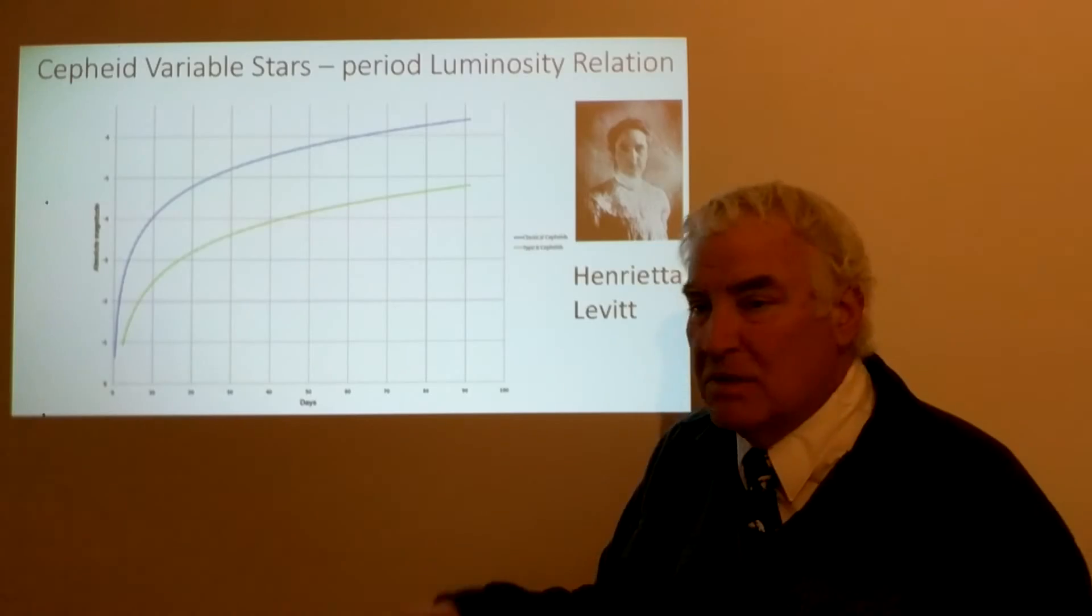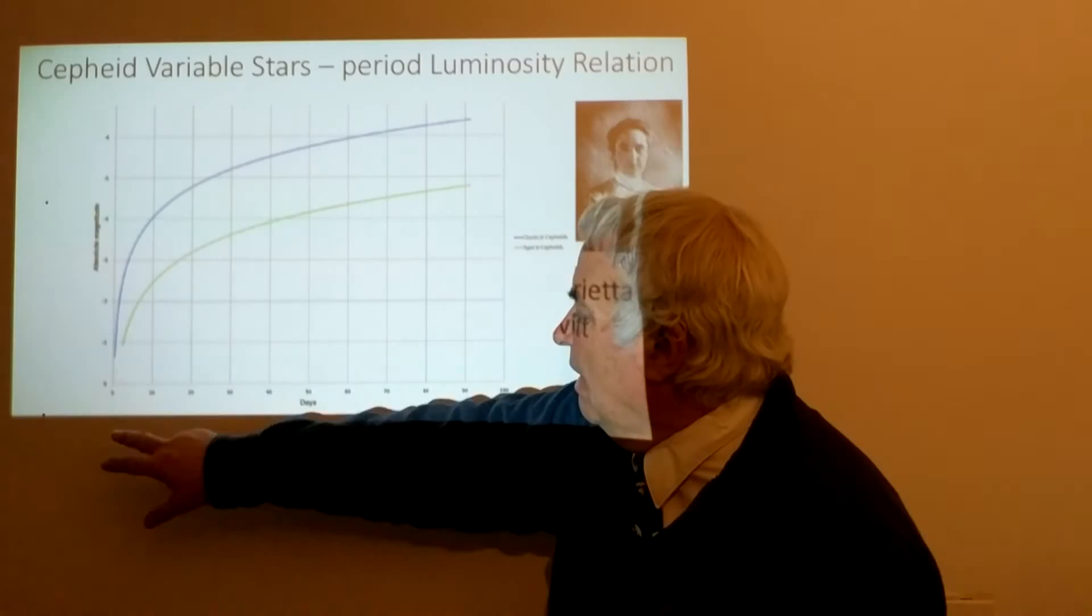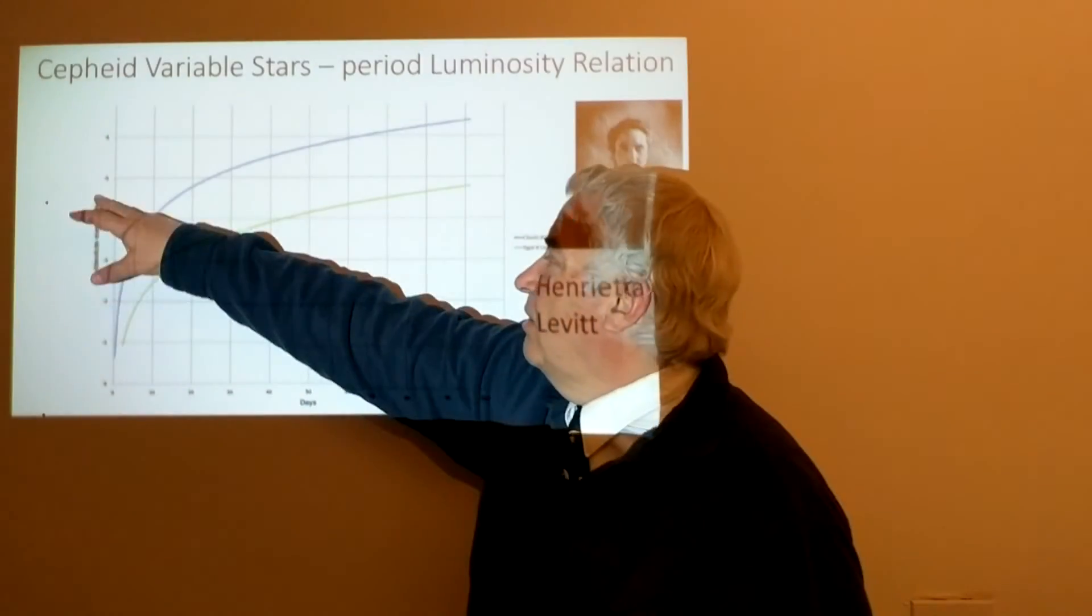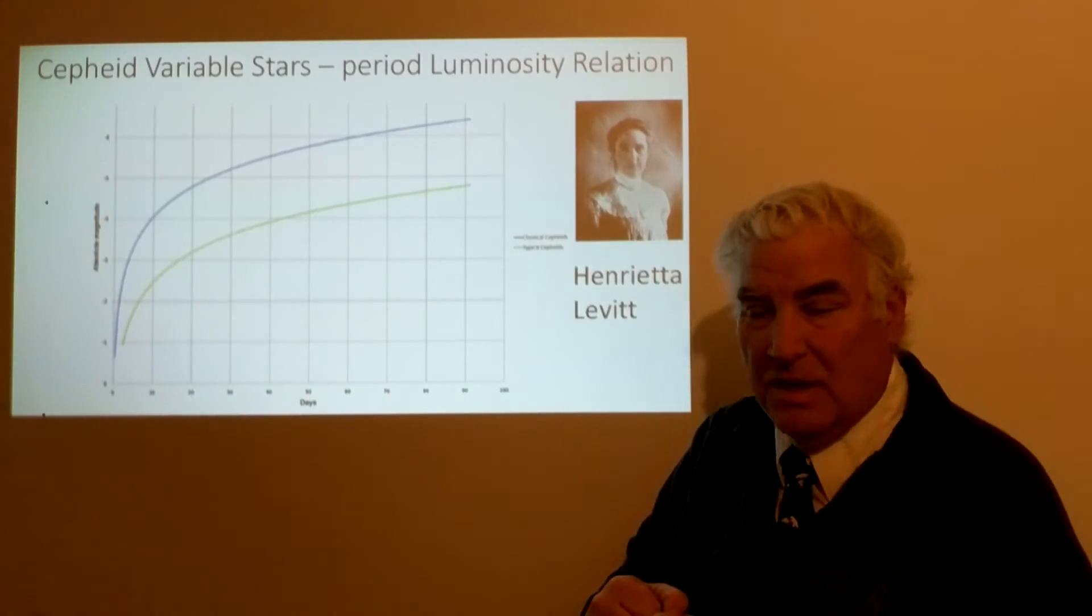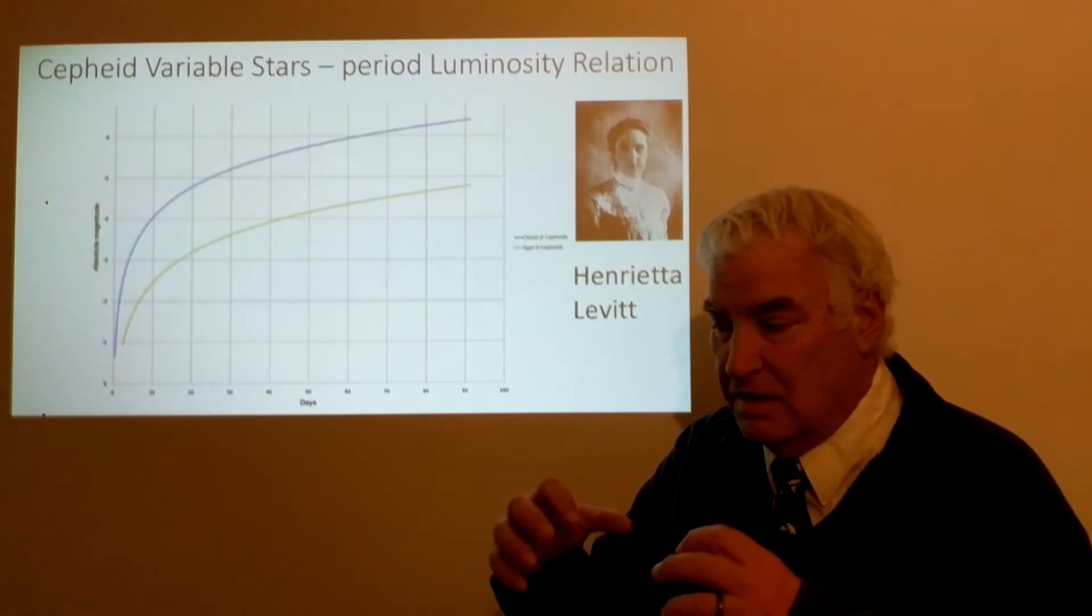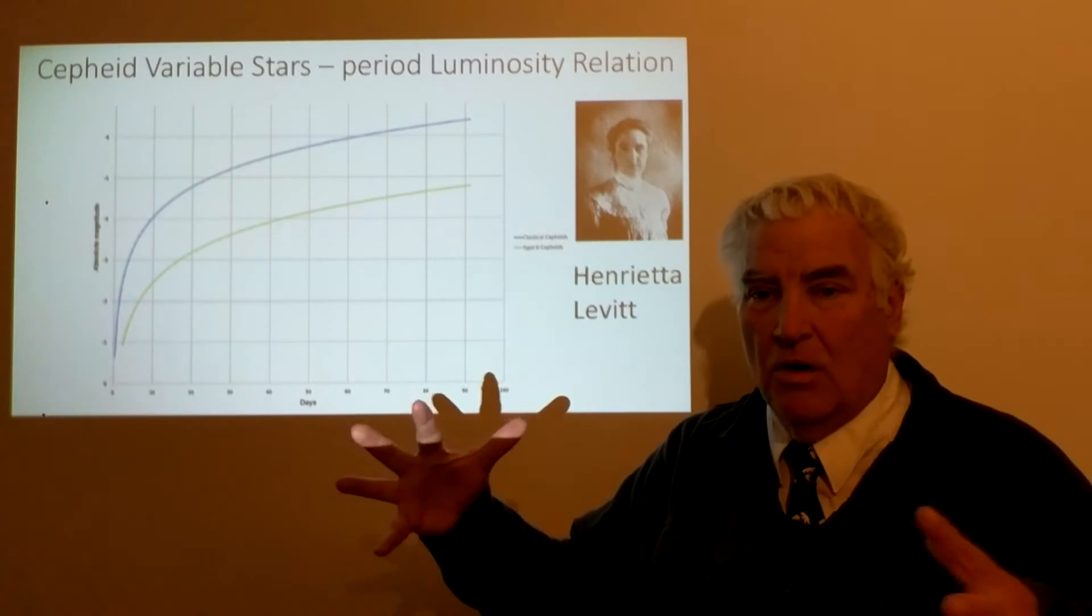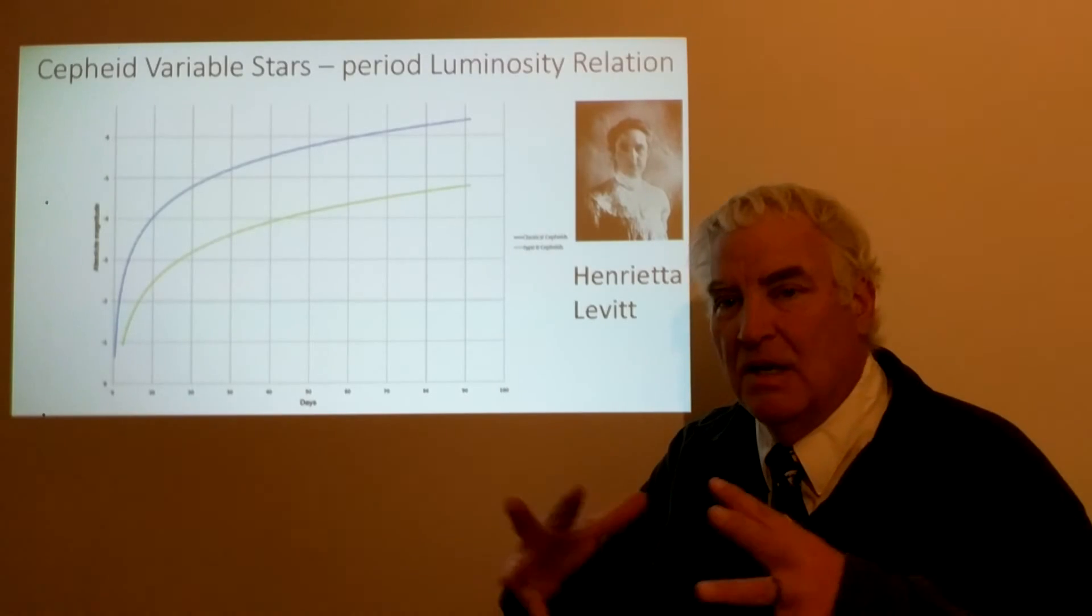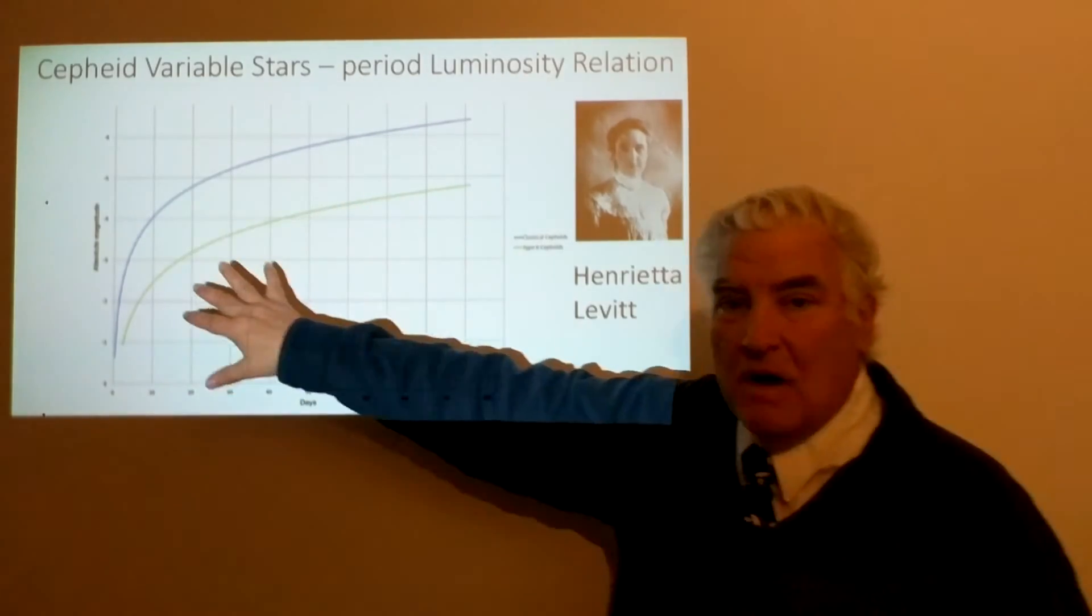And this relation was discovered by Henrietta Leavitt. The longer it takes to go through the cycle, the brighter the star is on average. So stars that are really massive and bright, those are the ones that take a long time to go through the cycle. The ones that are smaller and more compact, they go through quicker. And so that relationship was discovered by looking at many of the Cepheid variables.